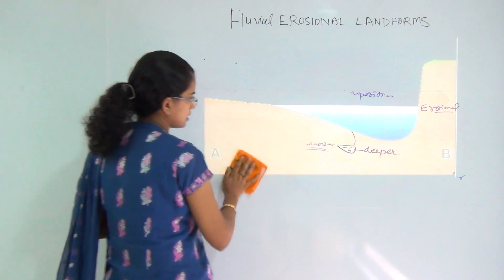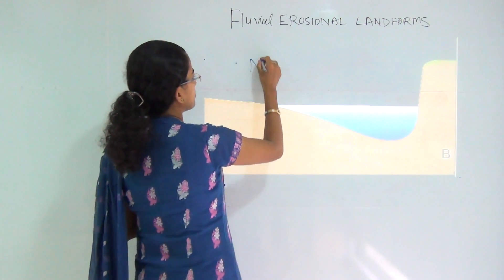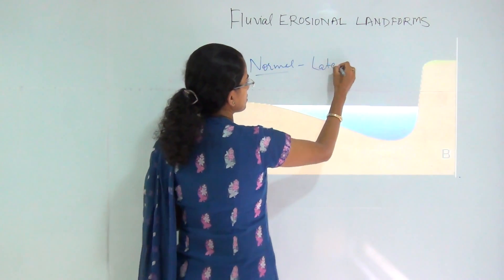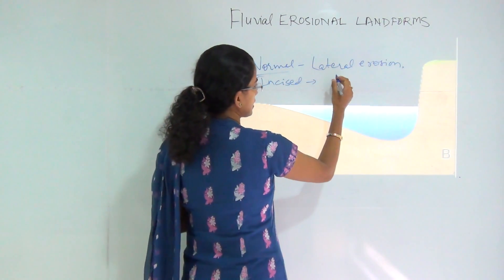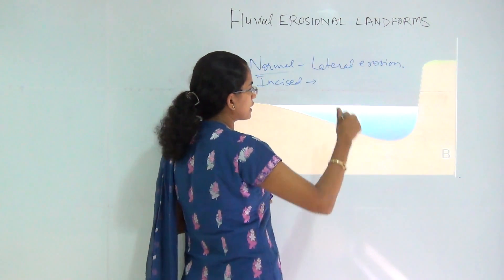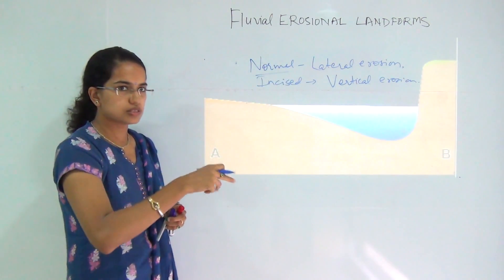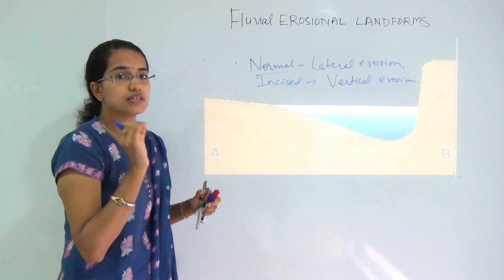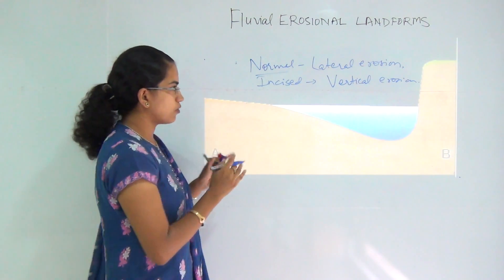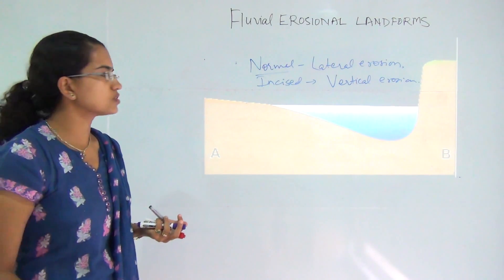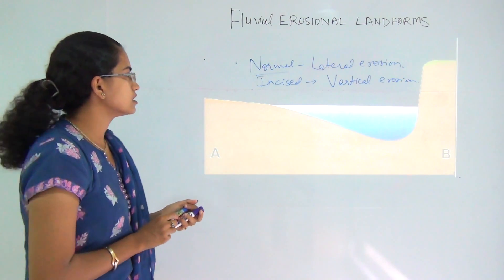Meandering rivers can be of various types and I will talk about a few important terms. First is the normal meander, which occurs by lateral erosion. The next is the incised meander, which occurs due to the process of rejuvenation and is a kind of vertical erosion. A classic example involves both erosion and deposition from running water. There are also other meandering types such as the horseshoe meander or the oxbow lake meander, which you can explore further in the course materials.